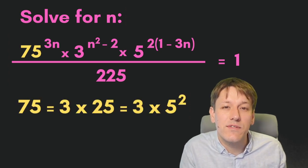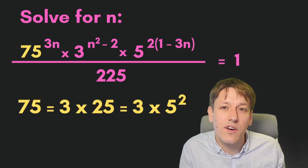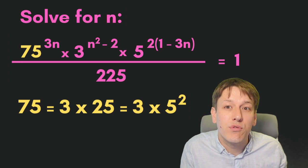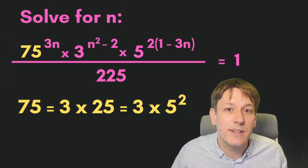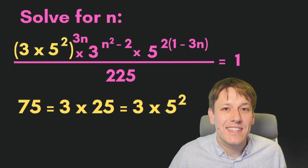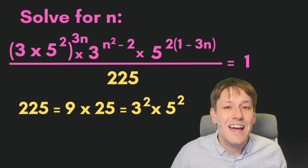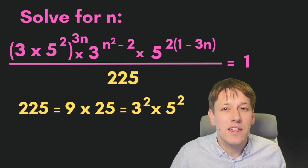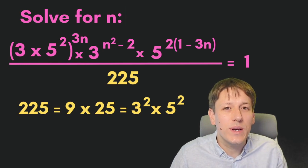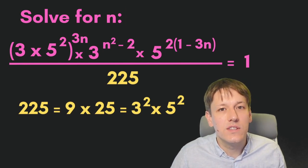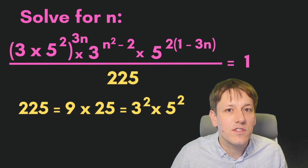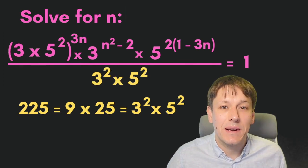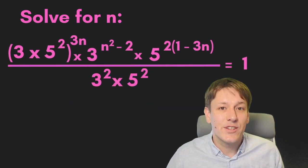Firstly, we've got 75. 75 is 3 times 25, or 3 times 5 squared, so let's replace that in the problem. We can do the same thing for 225, which is 9 times 25, or 3 squared times 5 squared, so let's replace that as well.